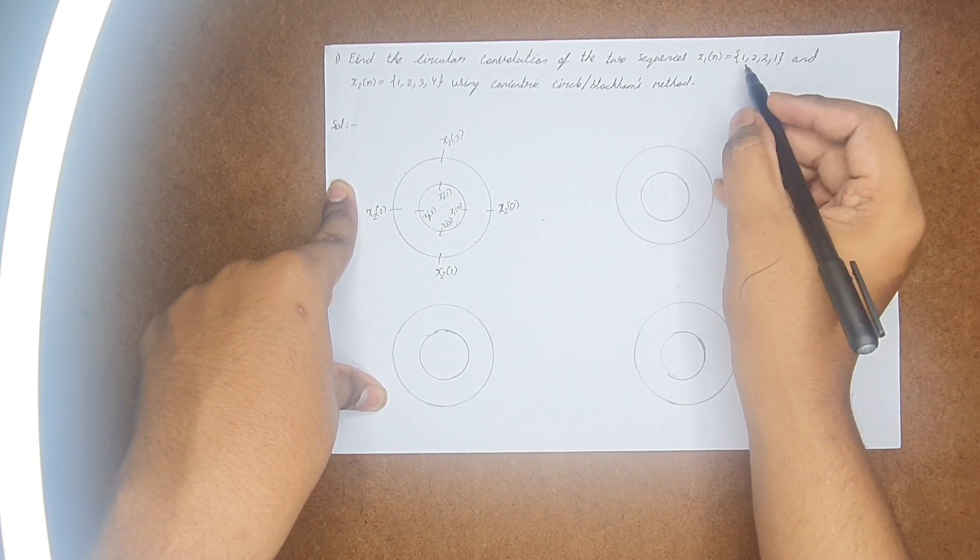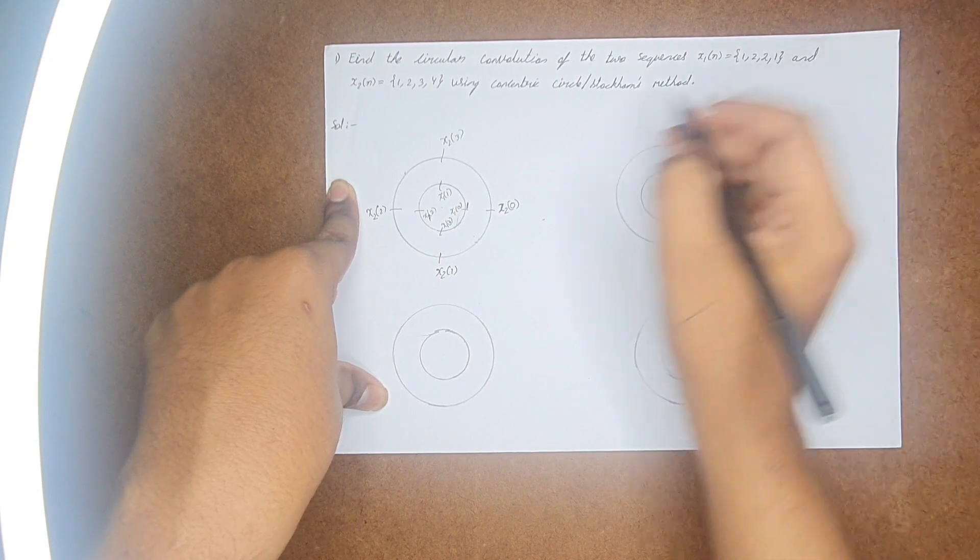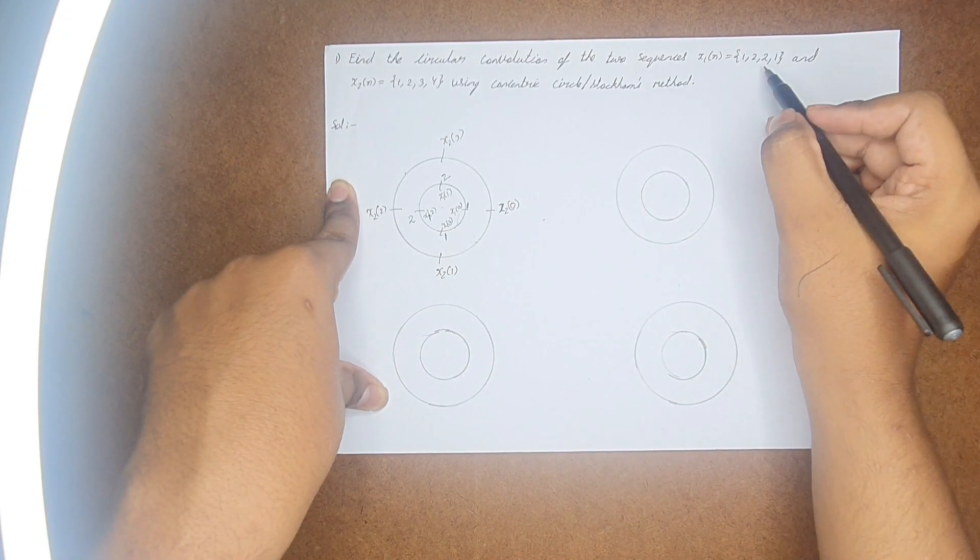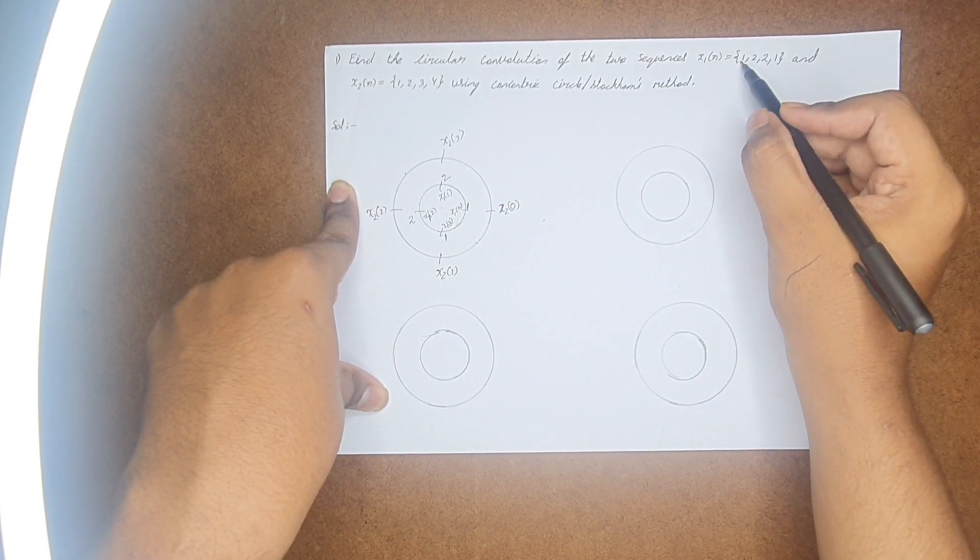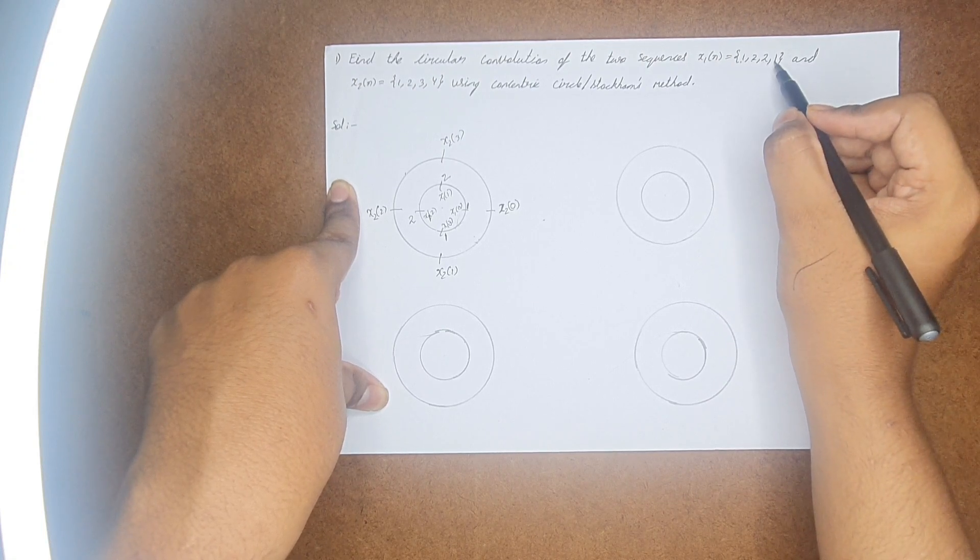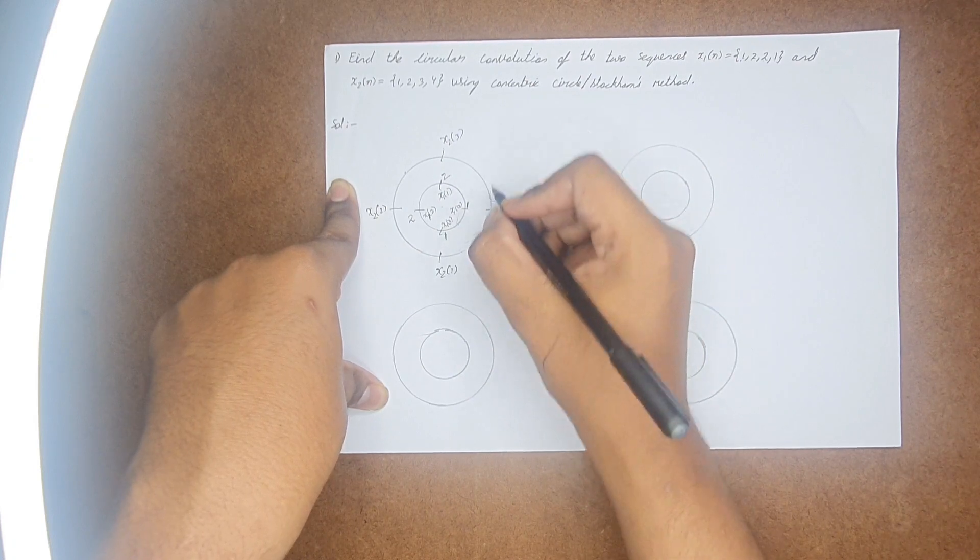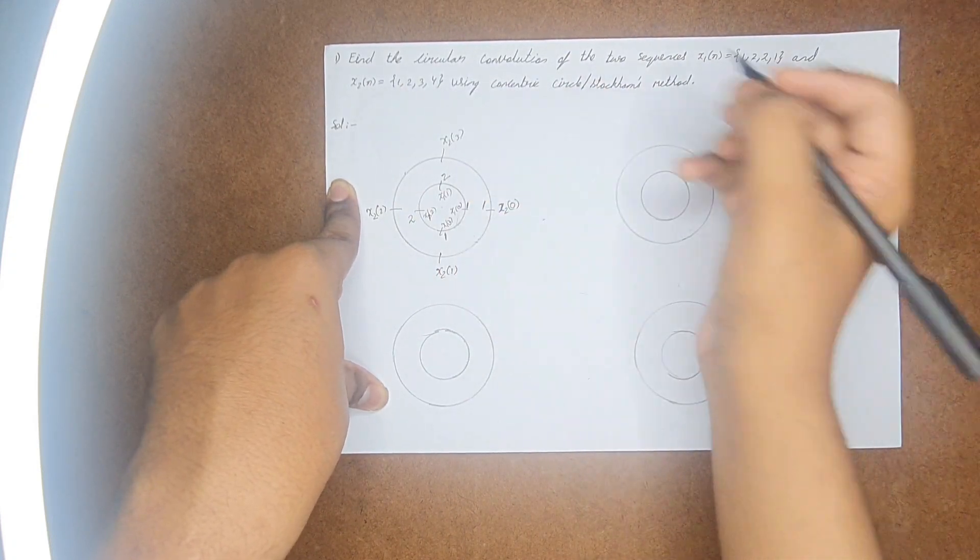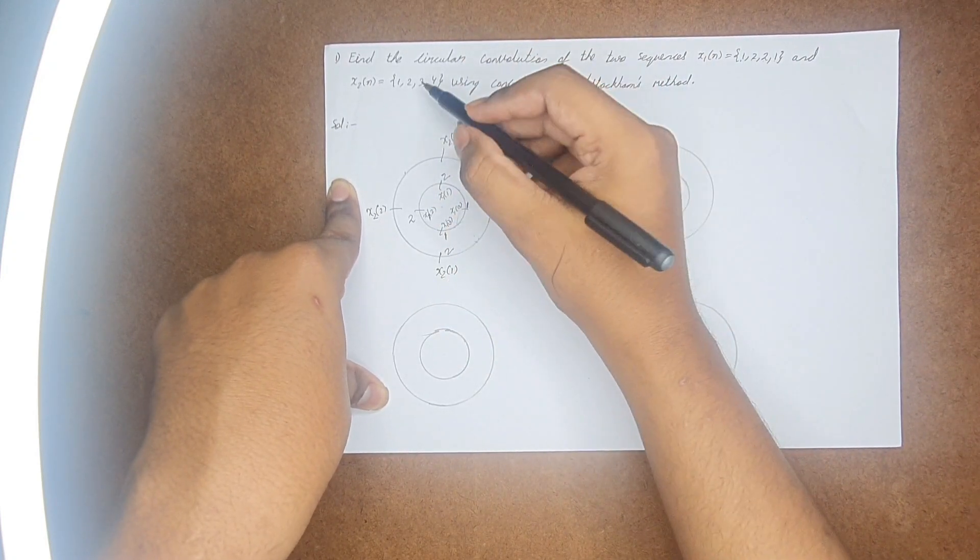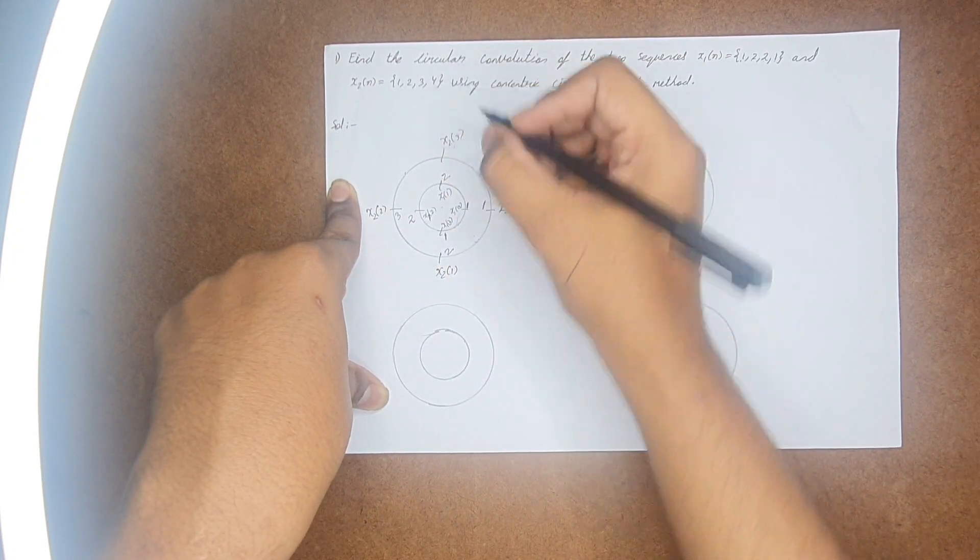So first let us write the values. Here x1(0) is 1, x1(1) is 2, x1(2) is 2, and x1(3) will be 1. That is according to the given question. Similarly, let us write x2. We need x2(0) here, which is 1. x2(1), which is 2. x2(2), this is 3. And you have x2(3), which is 4, here.